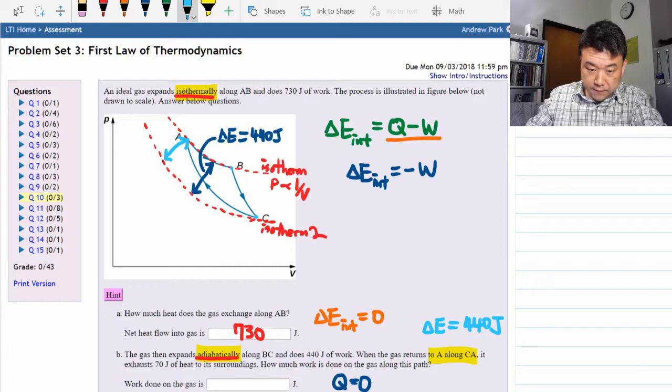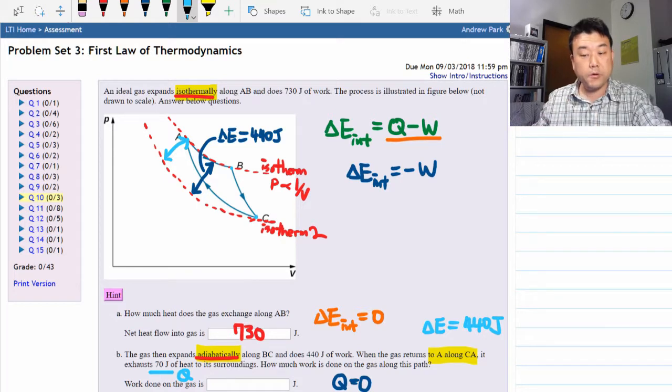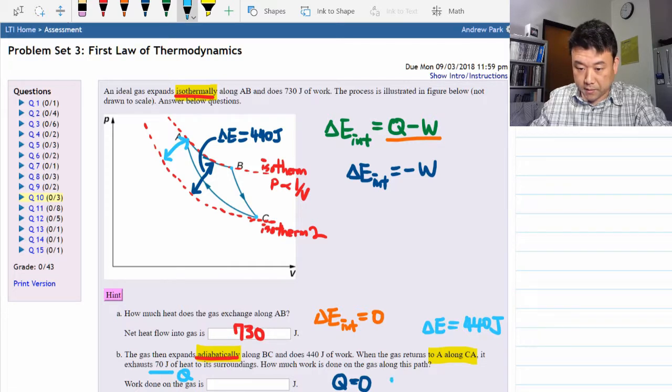The question gives you the Q. So all we now have to do is solve for W in the first law of thermodynamics. The work done along this path is equal to Q minus delta E internal.